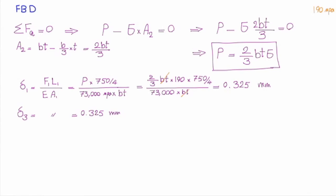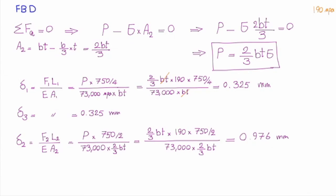How can I determine deformation in the second part? I will use the same equation, force times length divided by EA, but I would have different numbers. The internal force in the second part is P, which is 2/3 BT sigma. Length is L over 2, which is 750 millimeters divided by 2. Modulus of elasticity is 73 gigapascal. Area is A2, which is 2/3 of BT. The final deformation of the second part would be 0.976 millimeters.